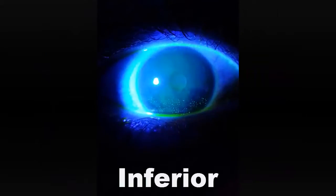We call this inferior staining. Why does this happen? Think of this like exposure keratitis — the inferior portion of the cornea is not being lubricated by the lids when blinking. How do you fix this? Re-visit your 3 and 9 o'clock staining techniques. We may have to look at the edge of the lens or consider altering the diameter.